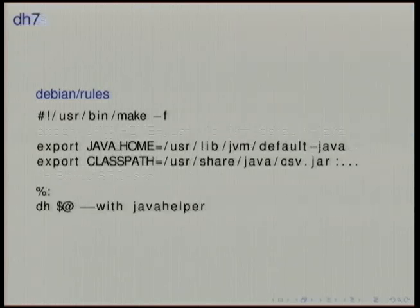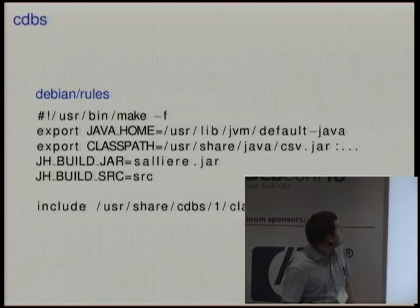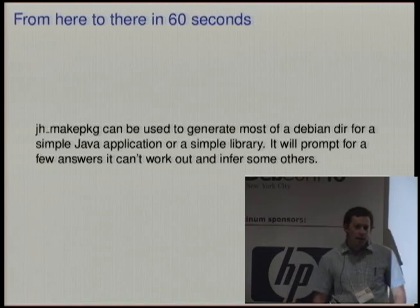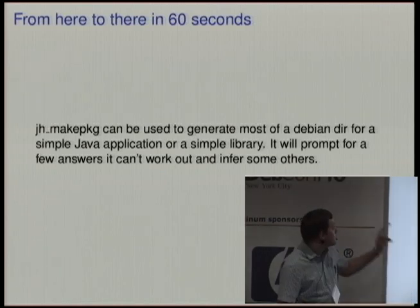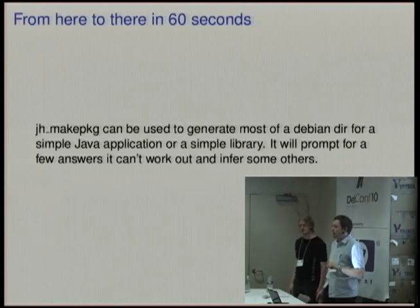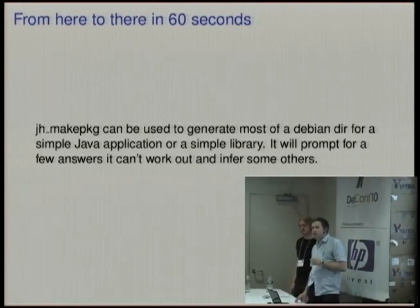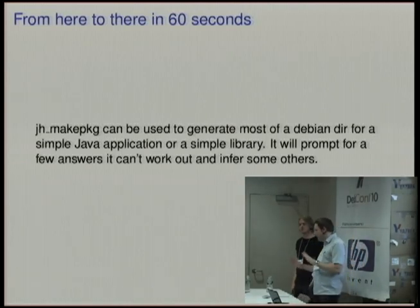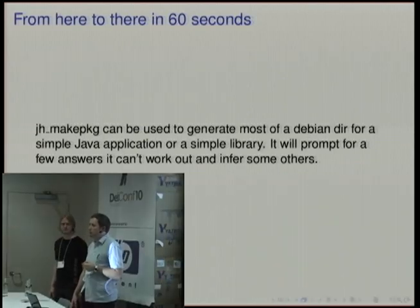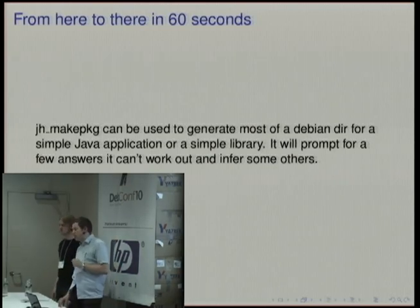Obviously this is only the ideal world, so you may end up having to override some things. That works exactly like you'd expect with deb helper — you can do override_dh_jh_tool and that'll work perfectly normally. In order to make this even easier, I wrote a tool called jh_makepackage. You can go to a build tree from upstream, call that, and it will try and build a debian directory for you which will need a little bit of modification with copyright files and so on, but will basically hopefully get a lot of this stuff right.